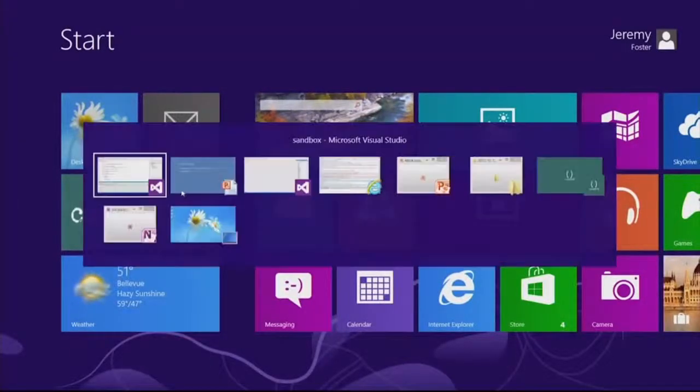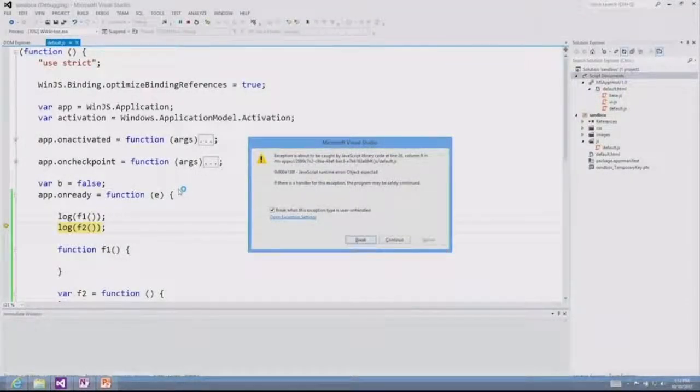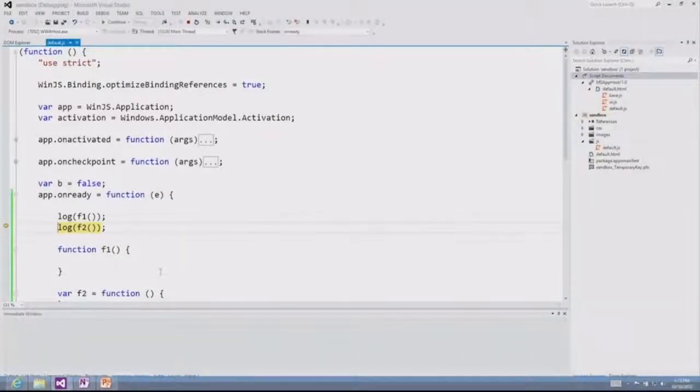If I hit F5, I'll actually go into debug mode in Visual Studio, and now it'll stop at that breakpoint and let me know what's going wrong. And it's saying, hey, I expected an object right here. You told me F2 was a function, and I haven't seen that as a function before.